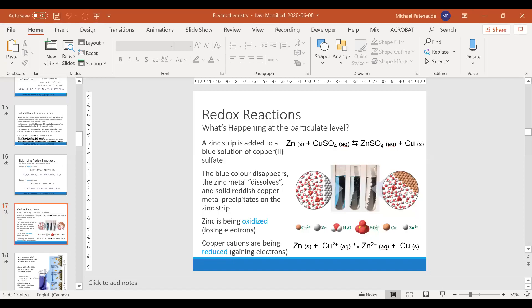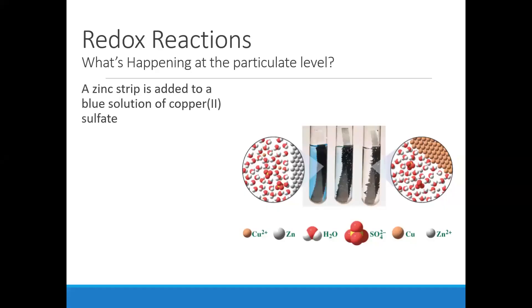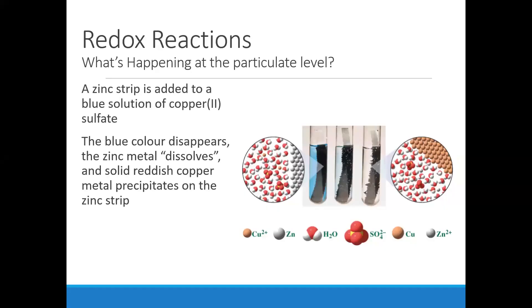We said in the very first definitions in this unit that electrochemistry involves using a spontaneous redox reaction to make electricity, to generate electricity. To understand how that can happen, let's consider a very simple and very common redox reaction.